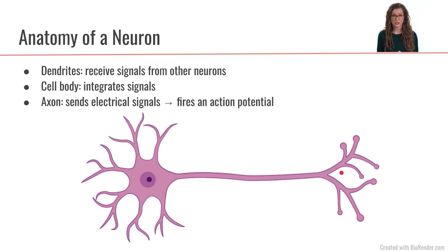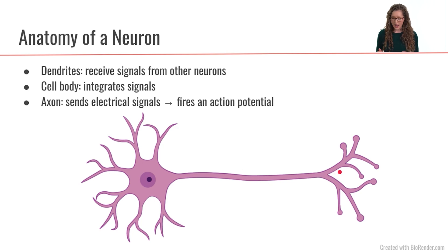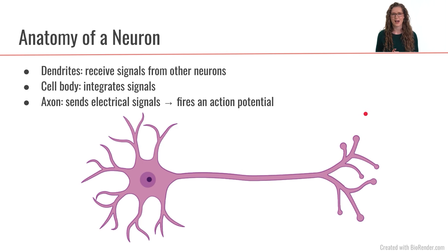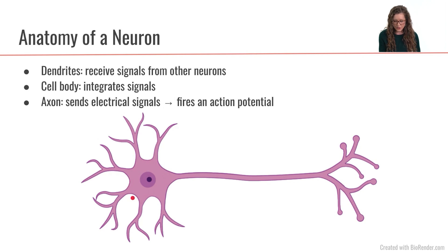Those signals are called action potentials. So our neuron will send an action potential down its axon, and that axon is then going to interface with perhaps other neurons or other tissues to stimulate or suppress various outcomes. So that is our general neuron — dendrites get the signals in, those signals get integrated in the cell body, and then the neuron will send action potentials down the axon.